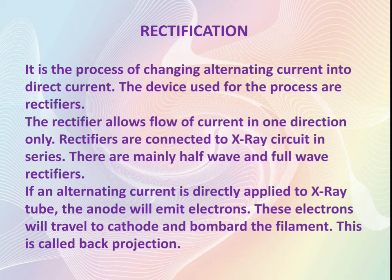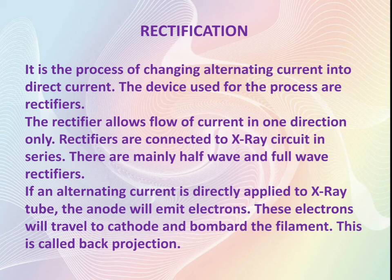Now why we cannot supply alternating current directly to the x-ray tube. If we do so, the anode will emit electrons. Normally, the cathode emits electrons and the electrons move to the anode, which is the target, bombard against it and produce x-rays. But if we supply alternating current, the anode will emit electrons, which will travel towards the cathode and bombard the filament, thereby destroying the cathode filament.